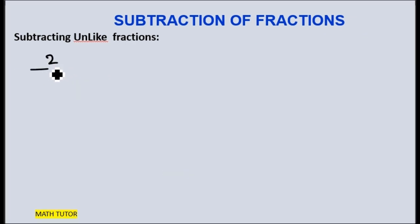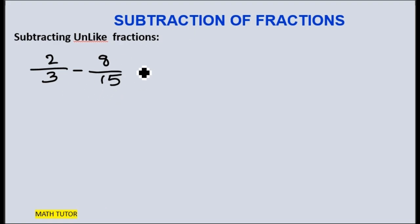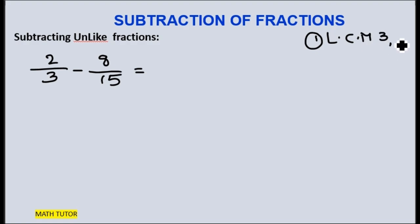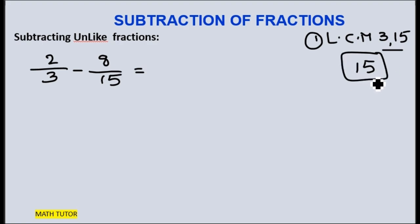Let us see one more example: 2 by 3 minus 8 by 15. We have to find the difference between these two fractions. We call them unlike fractions because their denominators are different. The first step to find the difference is to find the LCM of 3 and 15. 15 will be the LCM, and whatever LCM we get will be the new denominator for these fractions.